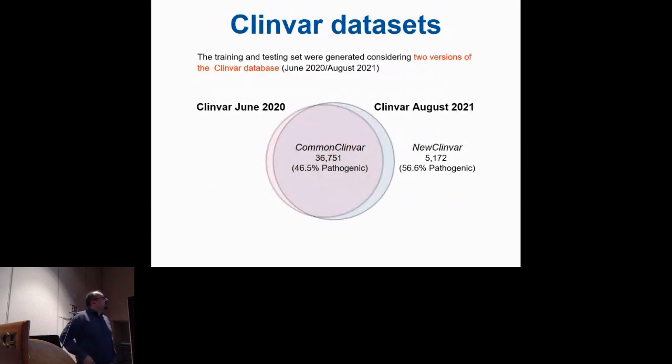To test the performance, we collected two datasets. One mainly taking two releases of ClinVar, taking the common subset with a large number of variants around 37,000. Then we used new variants deposited from June 2020 to August 2021 that were only present in the new ClinVar as a test set.